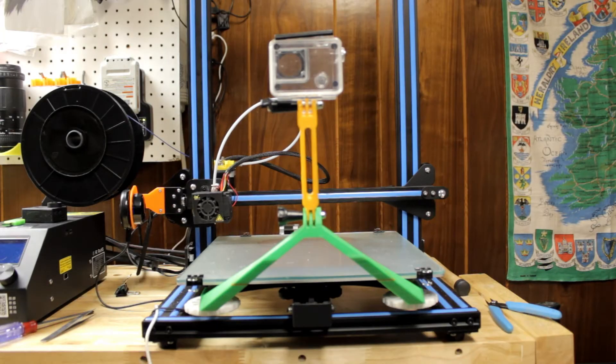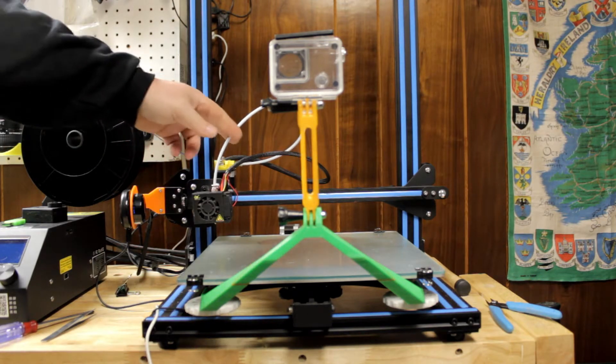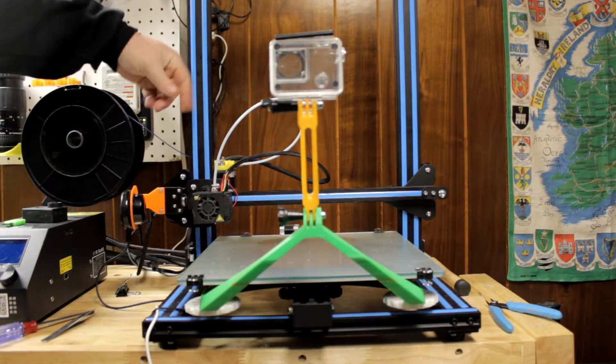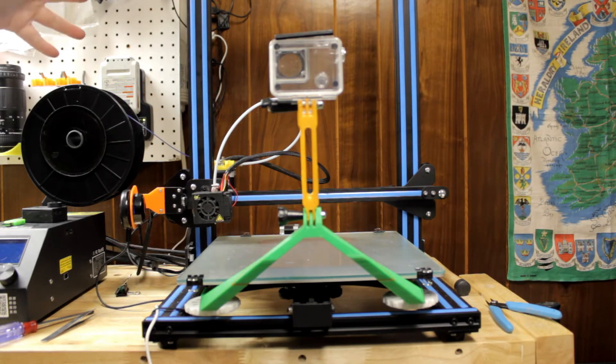No, I'm just kidding. It's a Creality CR10 3D printer. It's a Bowden style extruder. This is a PTFE tube that comes from an extruder back here that pulls the filament through, pushes it through to the hot end. All it is is a glorified hot glue gun.